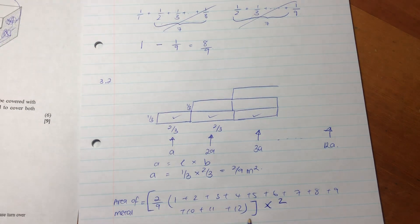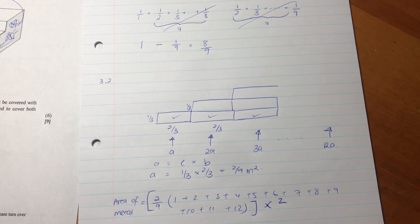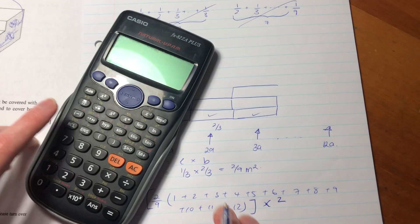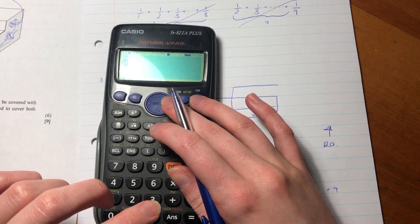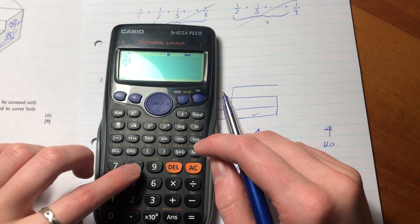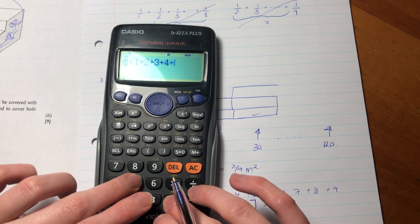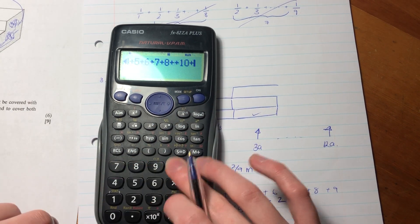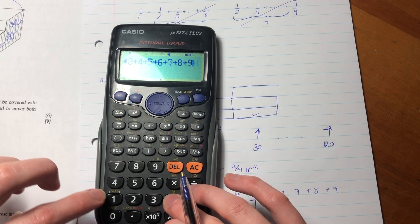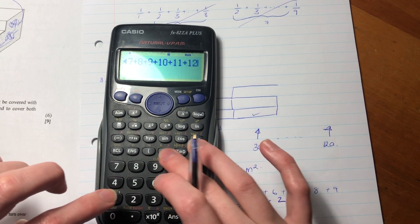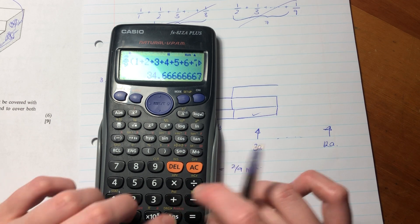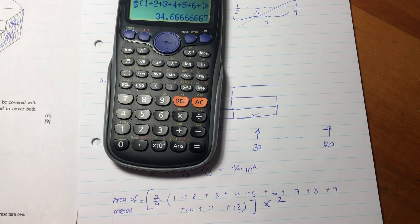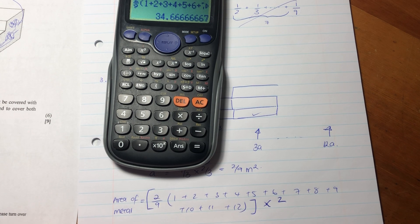Now we plug this into our calculator. We calculate (2/9) times (1+2+3+...+12), then multiply by 2. The answer is 34.67 meters squared.